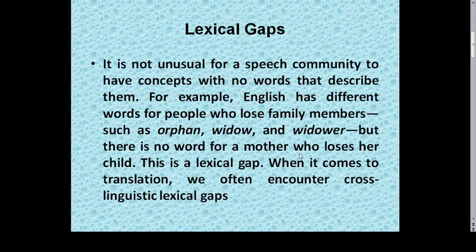We are going to start with lexical gaps. It is not unusual for a speech community to have concepts with no words that describe them. For example, English has different words for people who lose family members, such as orphan, widow, and widower, but there is no word for a mother who loses her child. This is a lexical gap. When it comes to translation, we often encounter cross-linguistic lexical gaps.